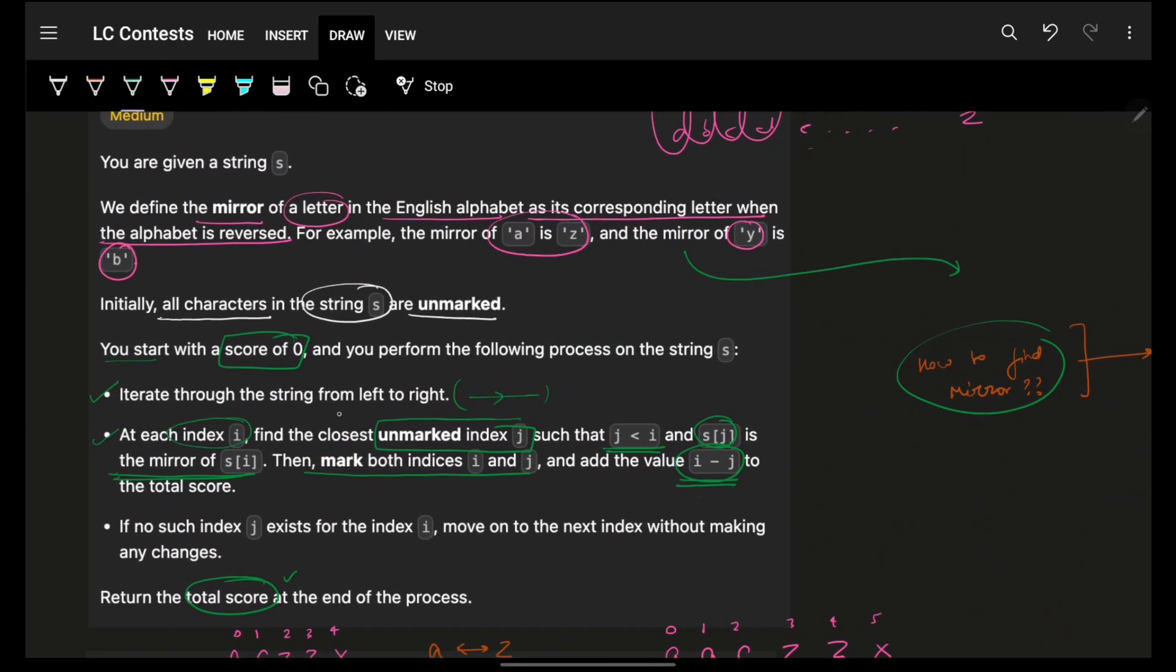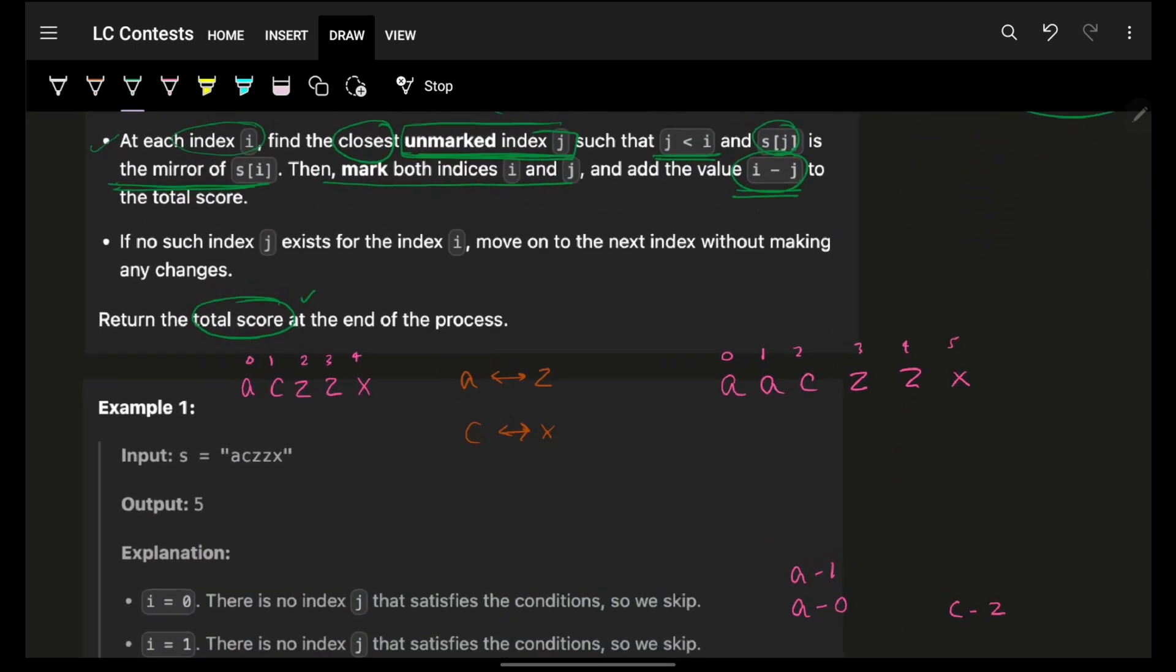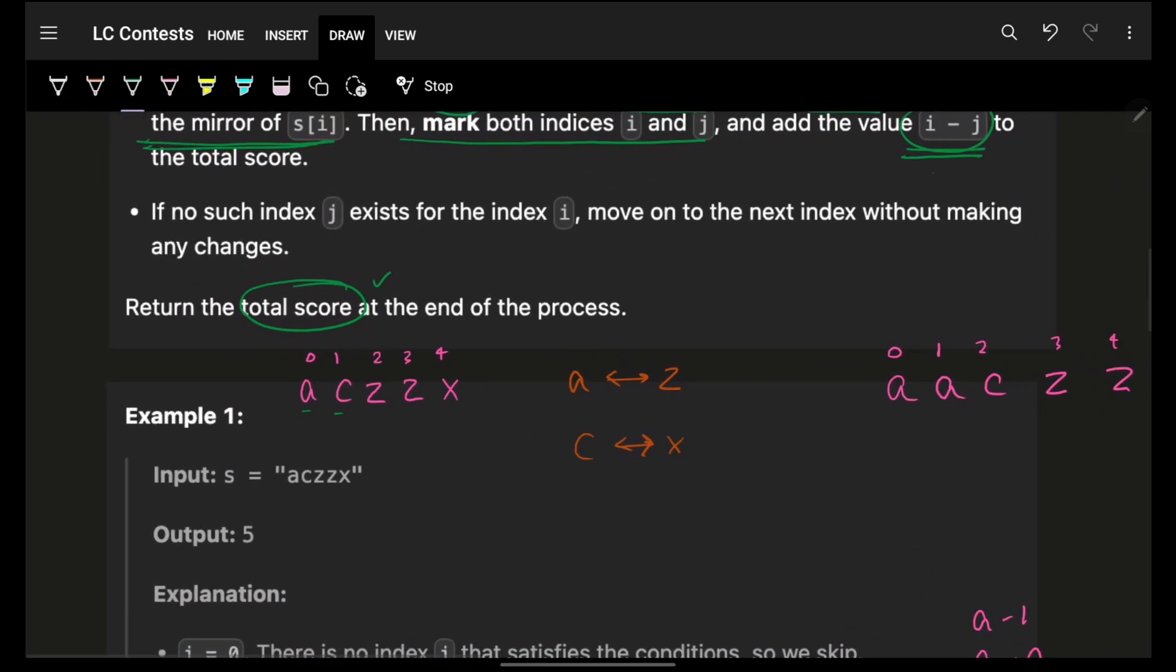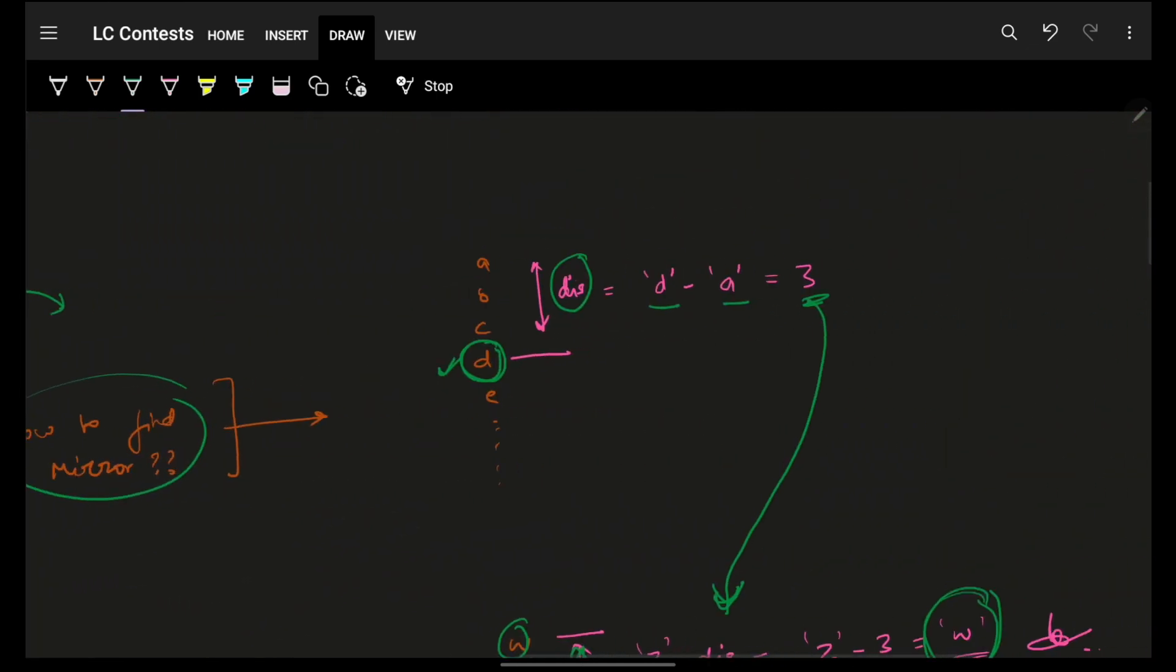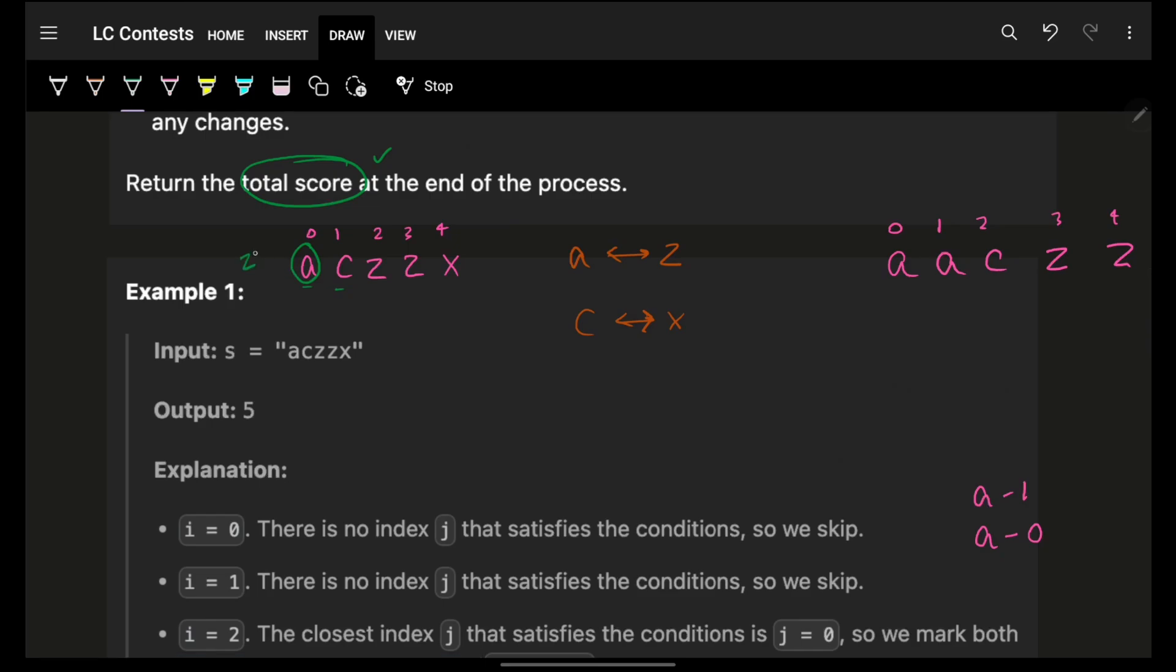So, if I have any character, I will find the distance from the beginning. Then, I will go and ask Z minus distance. This will give me the character having same distance from the end. And that's ultimately what I require also. So, with this, for any character, I can find its corresponding mirror with this specific formula. Now, when this is done, one thing is sorted. Another thing which is very important is that find the closest unmarked index J.